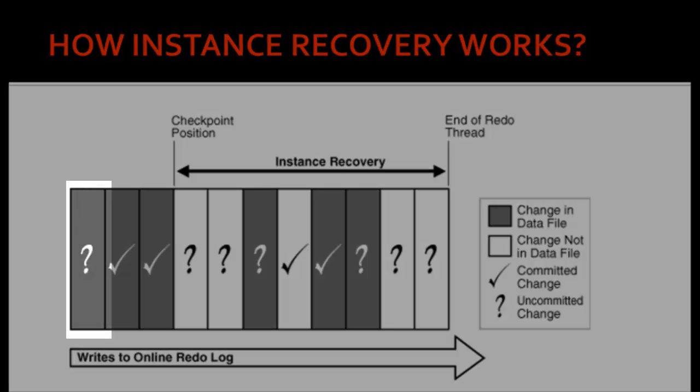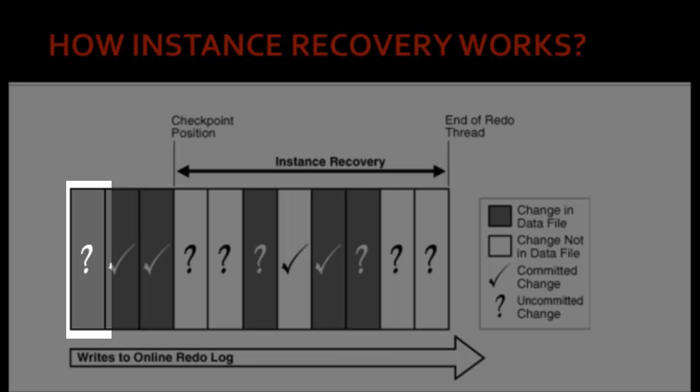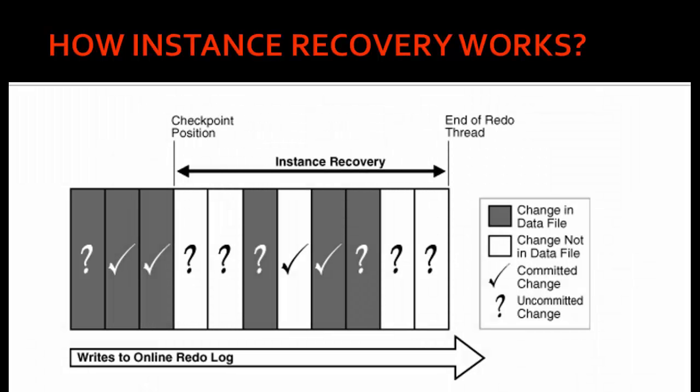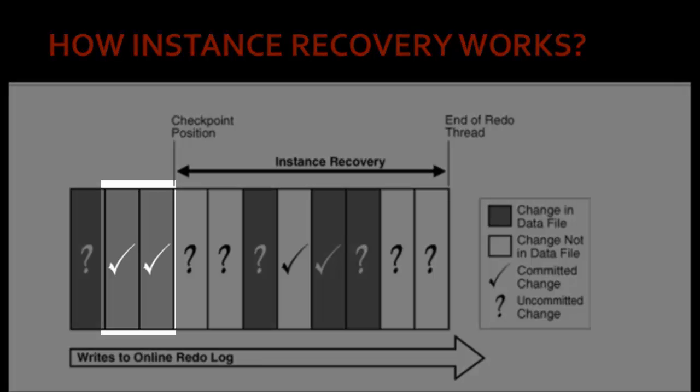The first transaction is an uncommitted change but it is written to the data file, because as I mentioned, transactions are made permanent to the database irrespective of whether they are committed or not committed. The next transaction is a committed change and also written to the data file, which means it is a consistent transaction — there is nothing to do on this transaction. If a transaction is committed and returned to the data file, no action is required because the user has already committed and the data is permanent in the database.